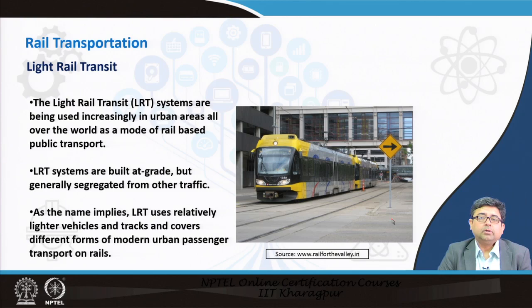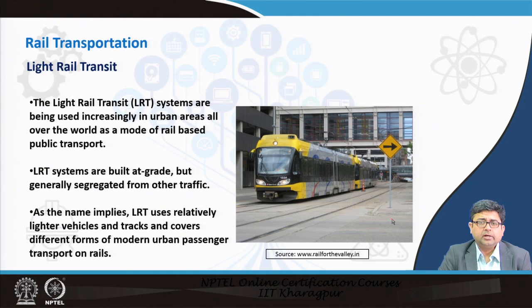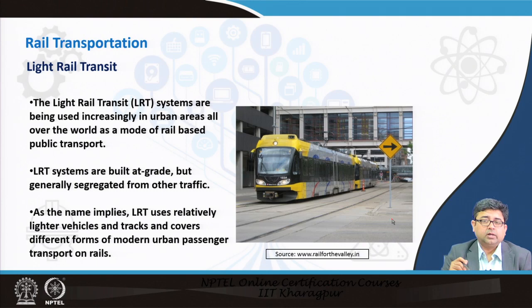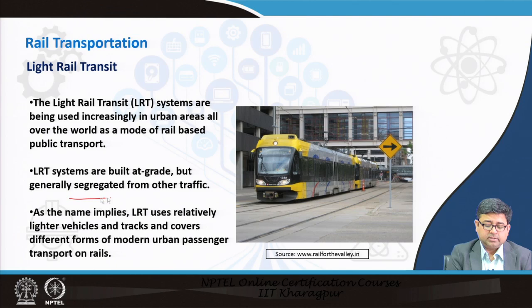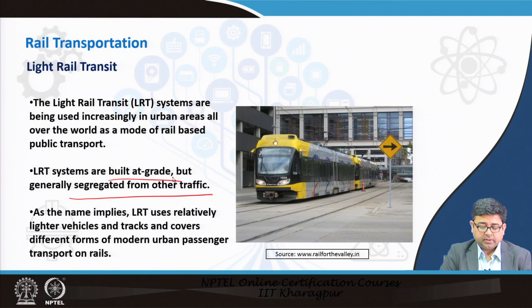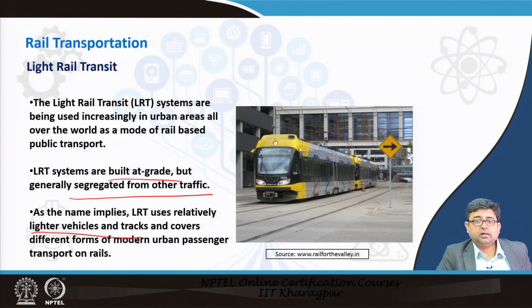The next type of urban public transportation system is light rail transit. In India, we do not have a fully operating light rail system; what we have is a tram system in Kolkata, which is very similar to light rail, but trams are not segregated from other traffic — they do not have a dedicated right of way. That is the key difference between LRT and a tram system. LRT is generally segregated from other traffic, both are built at grade, and LRT uses lighter vehicles, so costs are much less than a metro rail system.